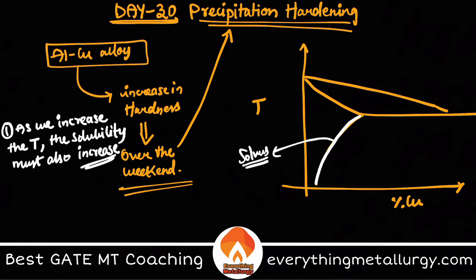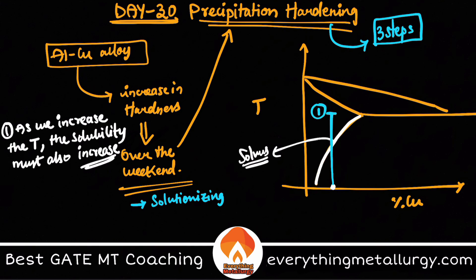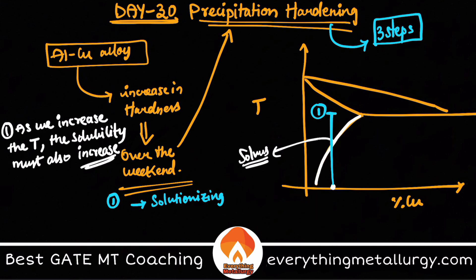Precipitation hardening has three steps. The first step is solutionizing. Solutionizing is nothing but heating to a single-phase region. From room temperature — where you have many phases — you heat to a single-phase region, which is a solid solution of copper in aluminum. That is the first step.